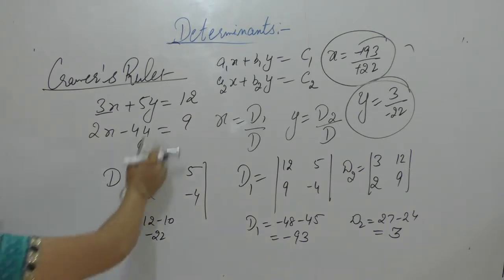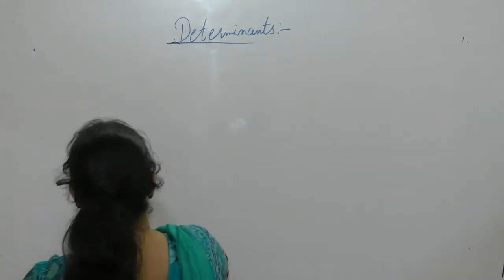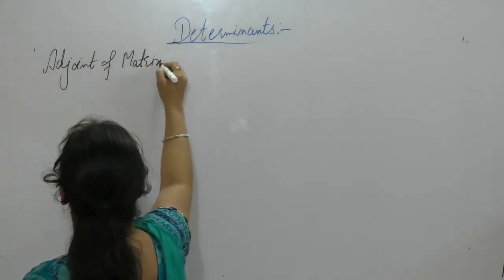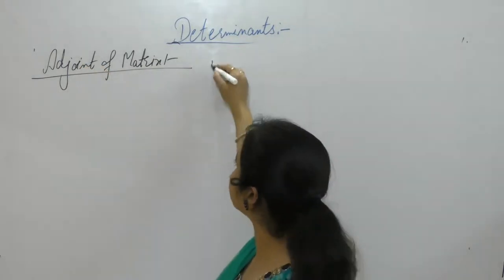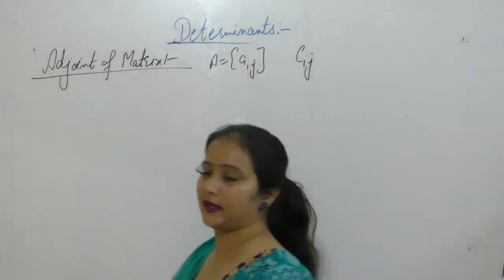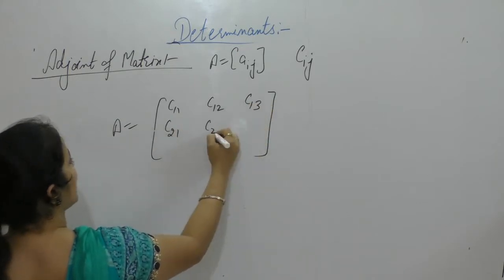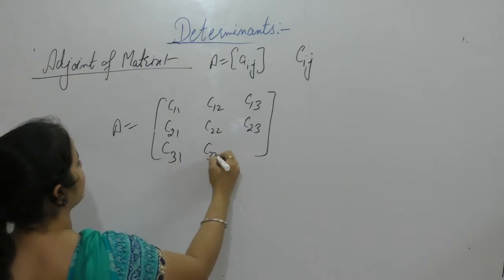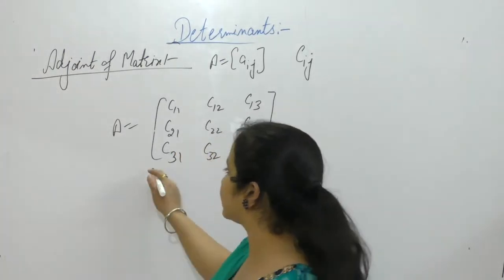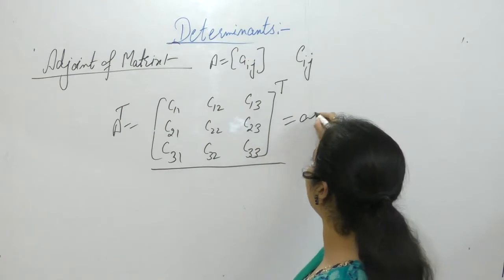Next is the adjoint of a matrix. Let A = [Aij] be any matrix of order N. Cij are the cofactors of matrix A. The cofactors are C11, C12, C13, C21, C22, C23, C31, C32, and C33. Now the transpose of the matrix of cofactors is called the adjoint of that matrix.